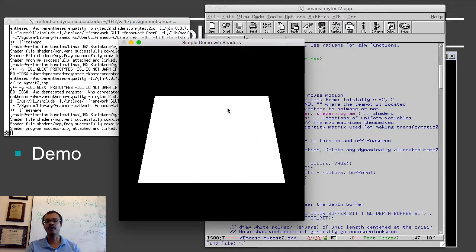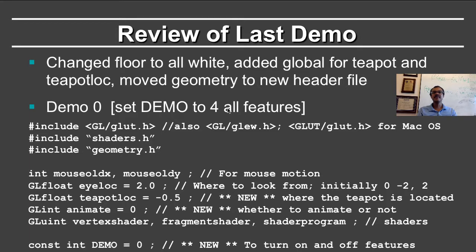The only changes from the earlier MyTest1 demo are that the floor is now all white. I have also added new globals for the teapot location, which is minus 0.5 — the left end of the screen in X — where it starts its animation. There is also an animate variable equal to zero, which says whether to animate the teapot or not, and of course my demo variable.